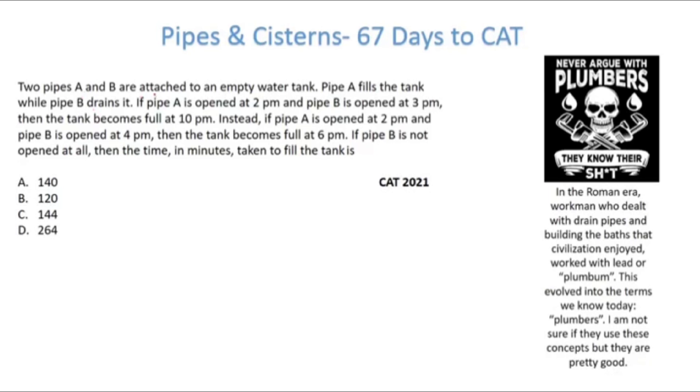There are two pipes A and B attached to an empty water tank. Pipe A fills the tank and pipe B drains it. If the work of filling the tank is one unit, then pipe A does the work in x hours. So one hour work for pipe A will be 1/x and similarly one hour work for pipe B will be 1/y minus, because it's a draining pipe. Pipe B completely drains the tank in y hours.